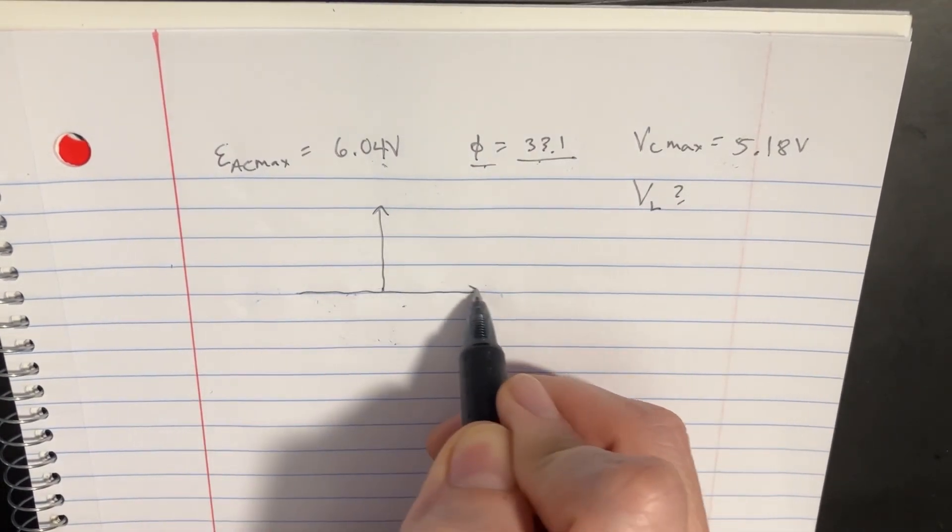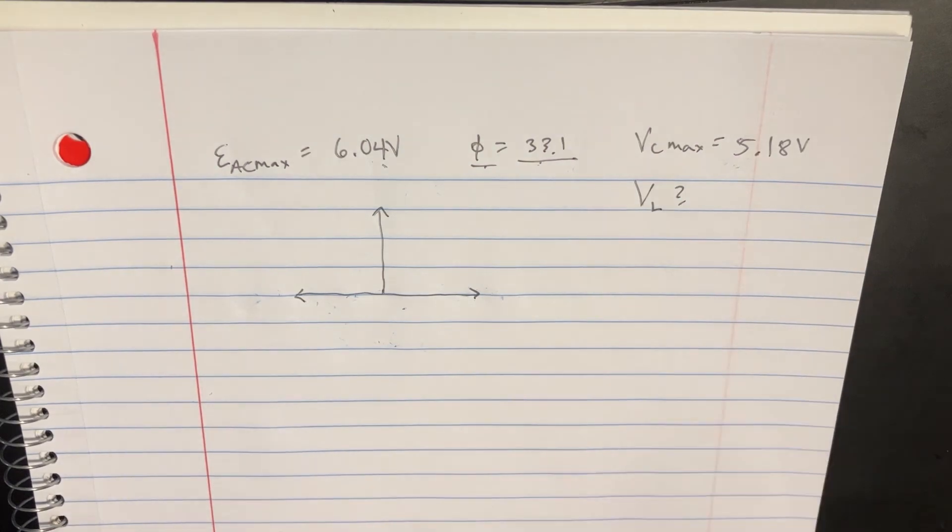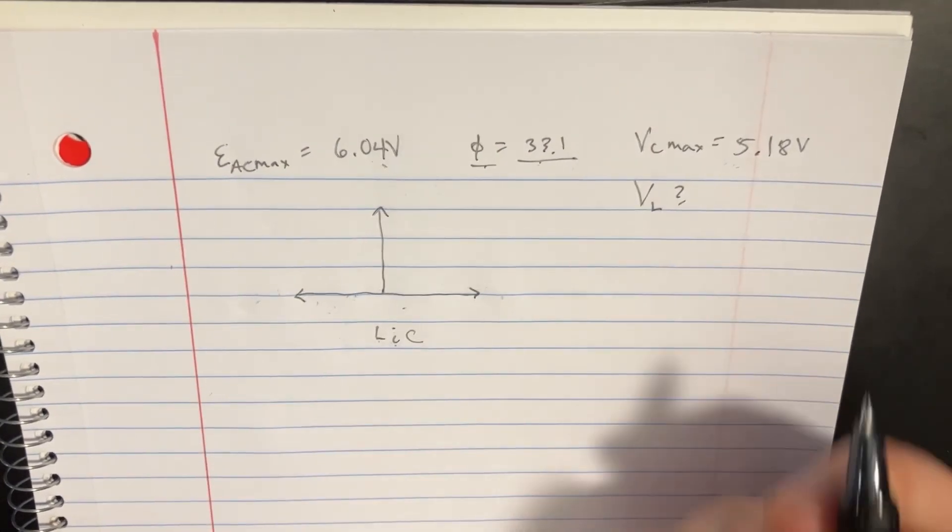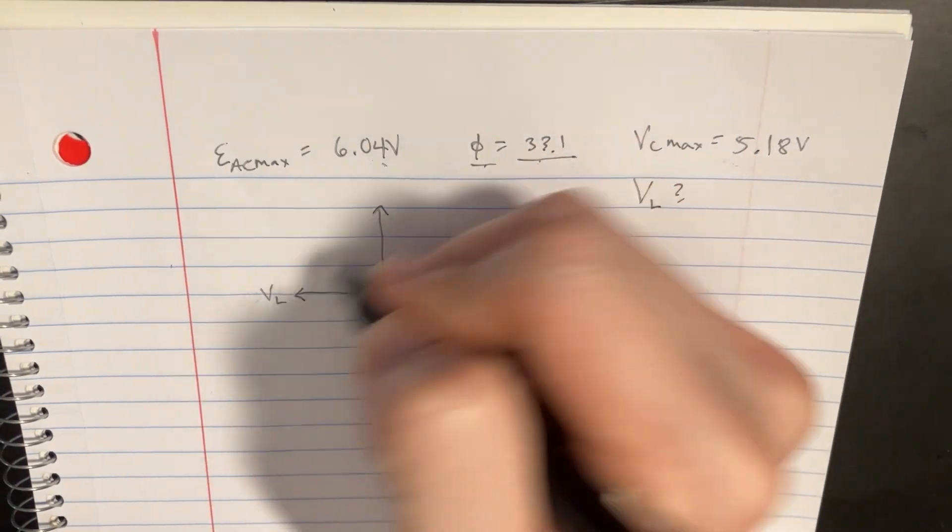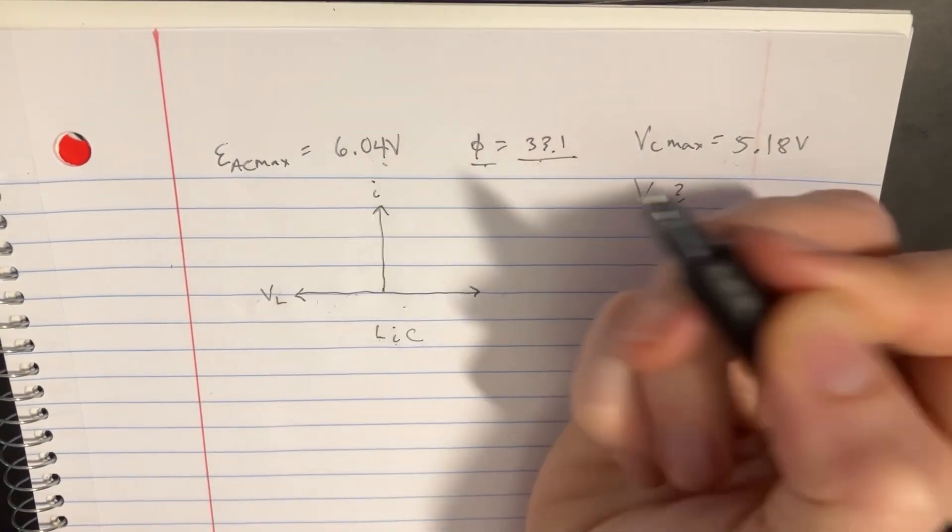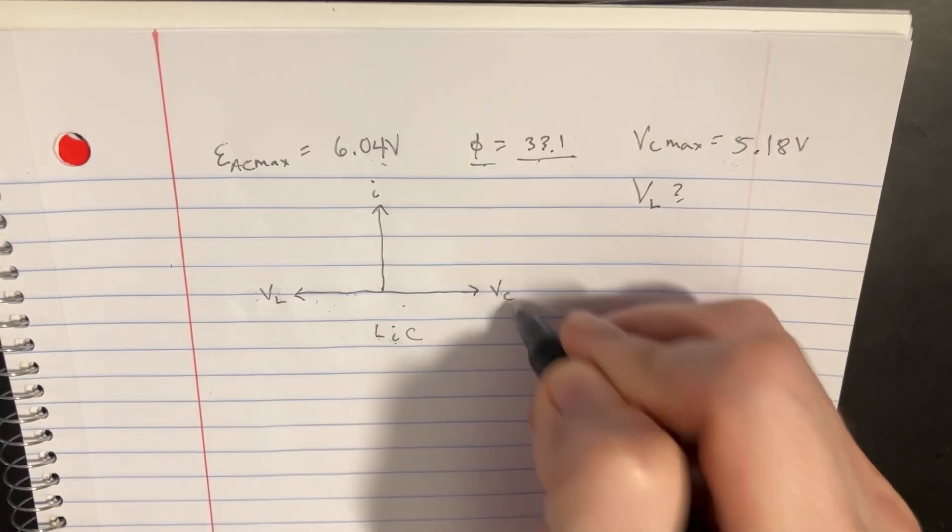We're going to set our little phase shift diagram thing here, and we'll remember LIC. L is going to be this side, voltage of the inductor. The I is right here. That's just the current. And over here, this is the voltage across the capacitor.